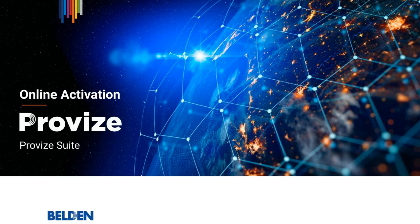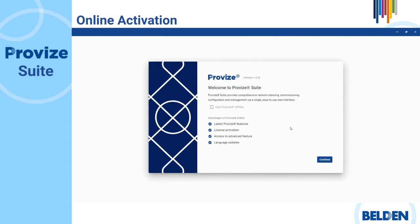You can activate or modify your license using Provise Suite while online. When Provise Suite starts for the first time, the application searches your PC for an active license. If there is no active license on your PC, the first dialog that Provise Suite opens is the Welcome to Provise Suite dialog. At this point, if you have an internet connection when you first open Provise Suite, click on Continue to activate your license online.